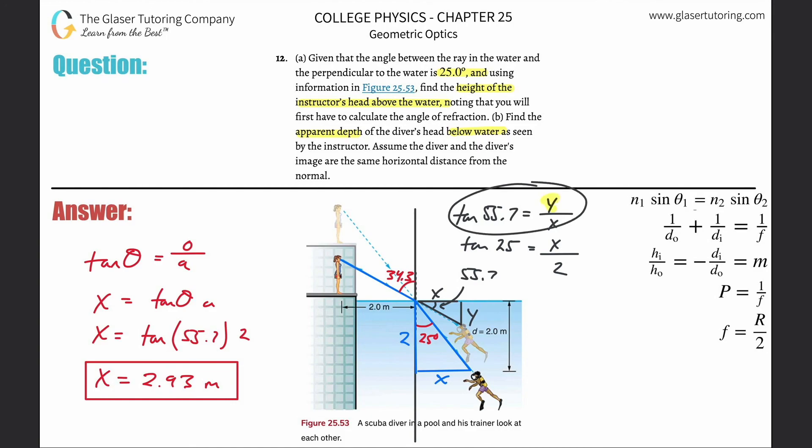So remember the whole goal here is to solve for Y. So what I'm going to do is solve this for Y. So Y will then be equal to tan of 55.7 multiplied by the X. And then what we're going to do is solve this for X. So X is now equal to tangent of 25 multiplied by 2, and realize now I can basically take this value and substitute it in here.